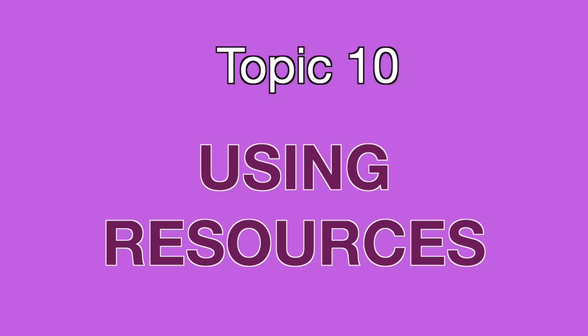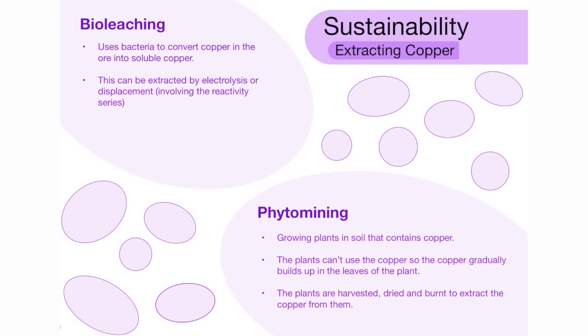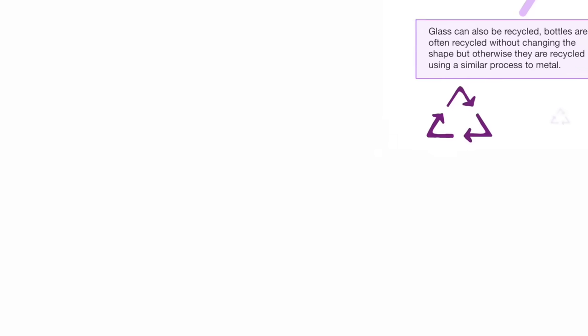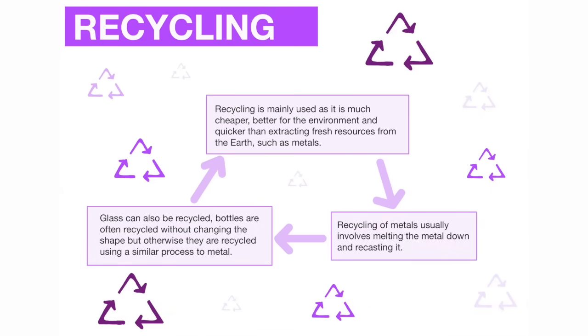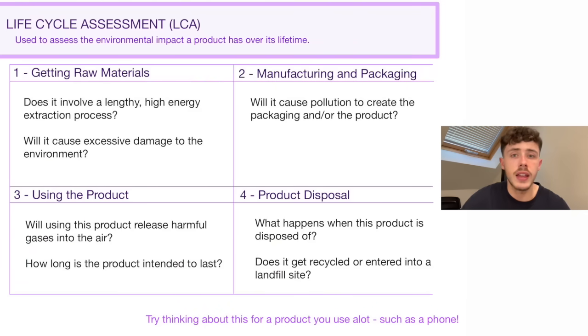The final topic, topic 10, is using resources. The first subtopic talks about sustainability. One example in modern life is the extraction of copper using more sustainable methods, including bio-leaching and phyto-mining. Next we talk about the process of recycling and how it's important. Something that goes alongside recycling is an LCA — a life cycle assessment. Every product created will go through a life cycle assessment, which evaluates the sustainability and environmental impact of that product throughout its lifetime.